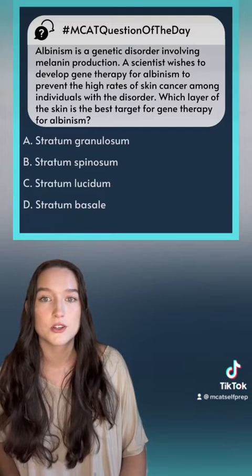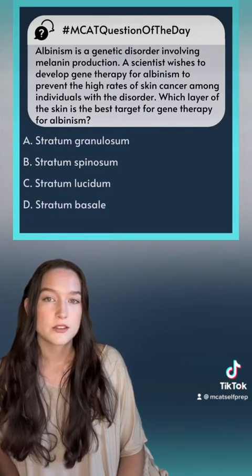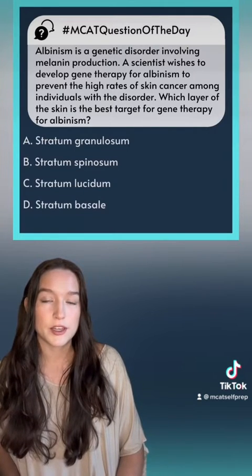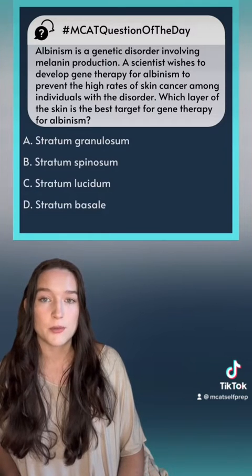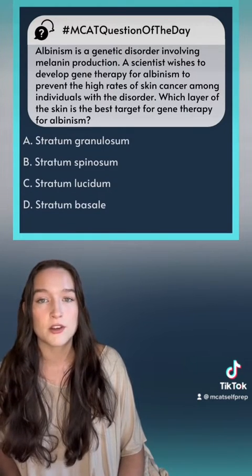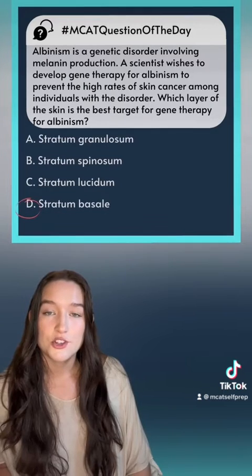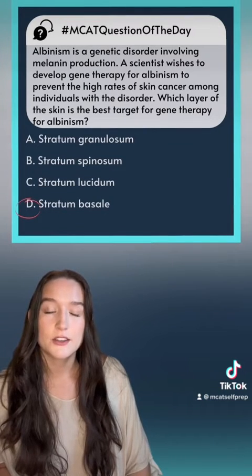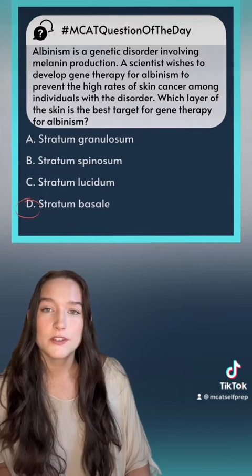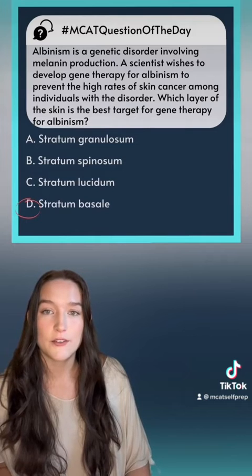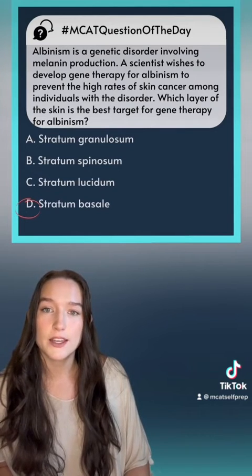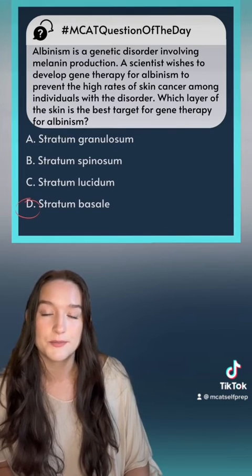Since we want to target the melanin-producing cells for gene therapy, we have to target melanocytes, which are only found in the stratum basale of the epidermis. Answer choice D, the stratum basale, is the most effective target for gene therapy in order to prevent cancer in individuals with albinism.